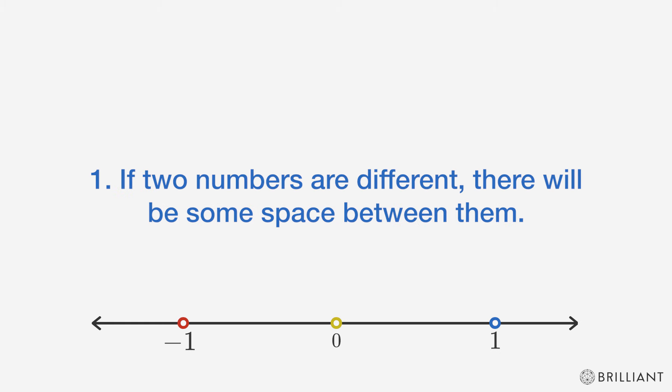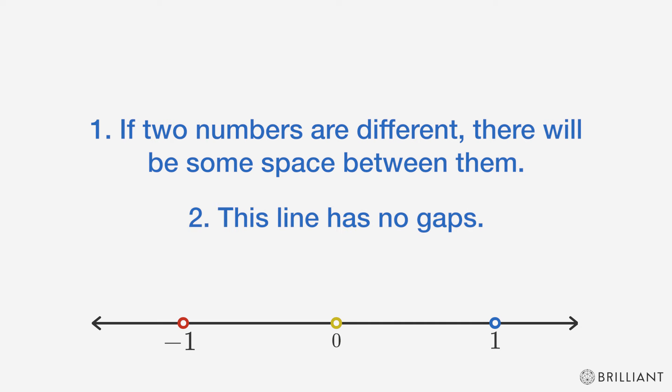One, if two numbers are different, there will be some space between them. And two, this line has no gaps.